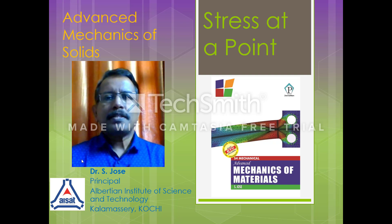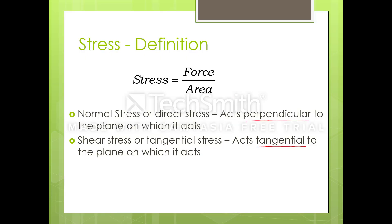How do you define stress at a point? A normal stress will be acting on a cross section. If you are taking a cross section like this, there will be normal stress acting on this section. The stress acting will be perpendicular to this plane, or to the surface, or to the area in which the stress is acting. A normal stress — a surface is perpendicular, a force acting.